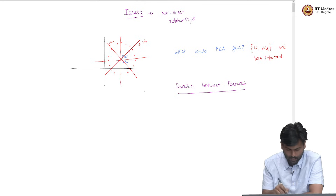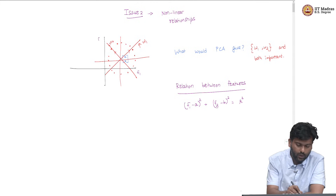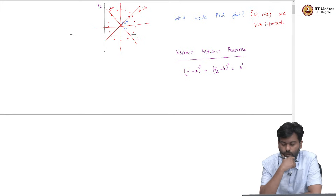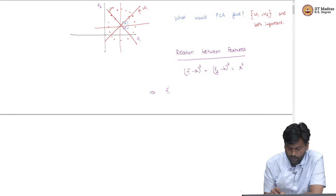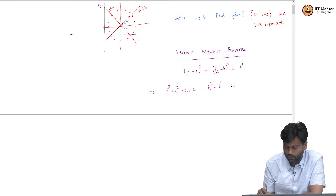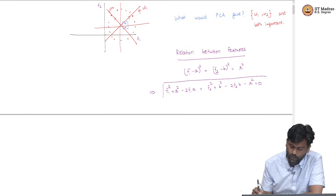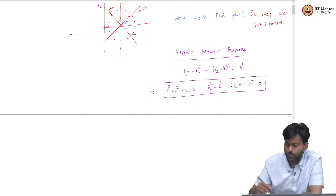Any data point in this data set has to satisfy (F1 - A)² + (F2 - B)² = R², where F1 is feature 1 (x-axis) and F2 is feature 2 (y-axis). This is the equation of a circle centered at (A, B) with radius R. Expanding this equation, we get: F1² + A² - 2·F1·A + F2² + B² - 2·F2·B - R² = 0. This is the basic relationship all data points satisfy, and as we can see, this is not a linear relationship, because it has F1² and F2² terms. That is obvious from the picture but also from the equations.